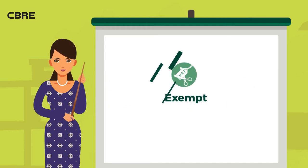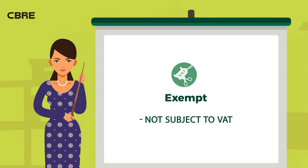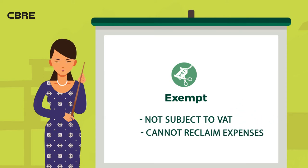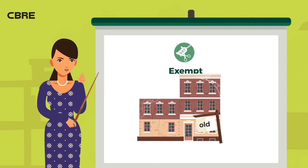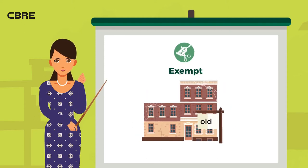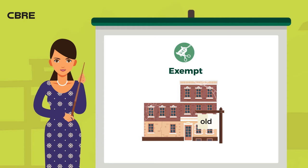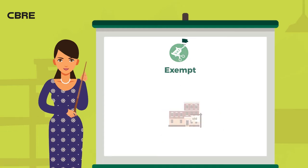VAT exempt is when a good is not subject to VAT. That means that the suppliers of this VAT exempt good are not able to reclaim VAT expenses from their inputs. For example, an old residential unit — in other words, a property that hasn't just been handed over from the developer.